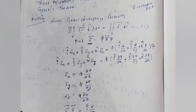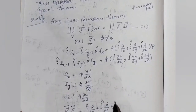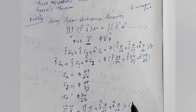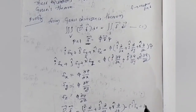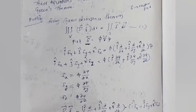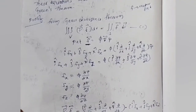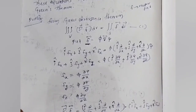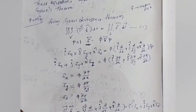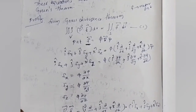Now, what is del dot F? (I ∂/∂x + J ∂/∂y + K ∂/∂z) dot (I·Fx + J·Fy + K·Fz). Since I·I = 1, J·J = 1, K·K = 1, we get ∂Fx/∂x + ∂Fy/∂y + ∂Fz/∂z. All other cross terms equal zero.